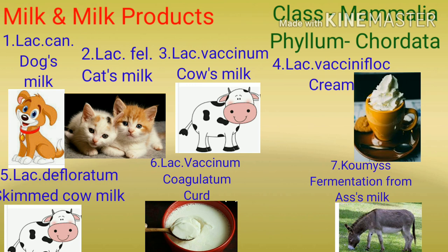First one is Lac caninum — that is dog's milk. Second is Lac felinum — cat's milk. Lac vaccinum is cow's milk. Lac vaccinum flos cream is cream. Lac defloratum is also cow's milk but it is skimmed cow milk. Lac vaccinum coagulatum — as the name suggests, it has been coagulated, so it is curd. And we have got a medicine from ass milk, actually by fermentation from ass milk.